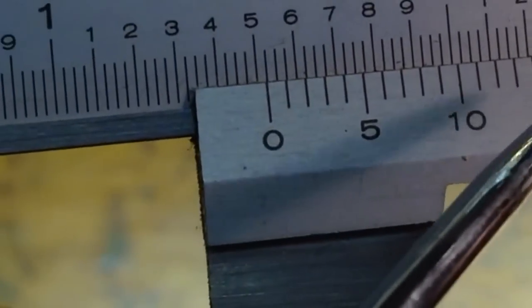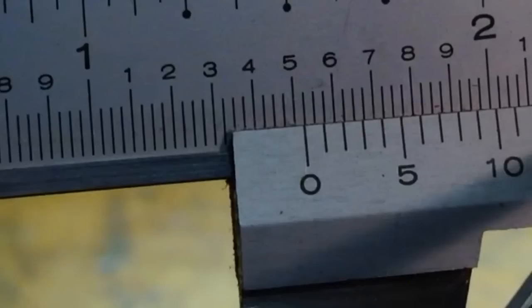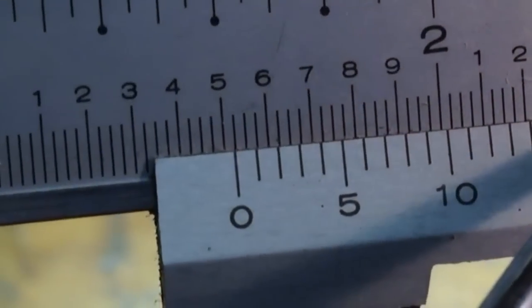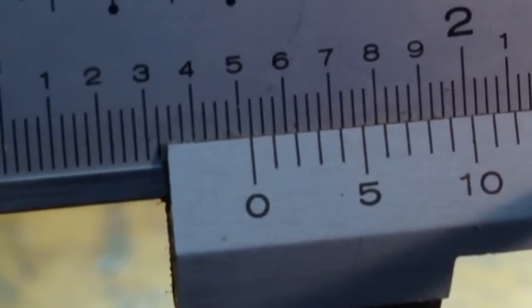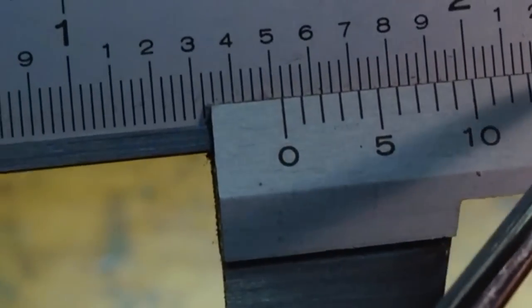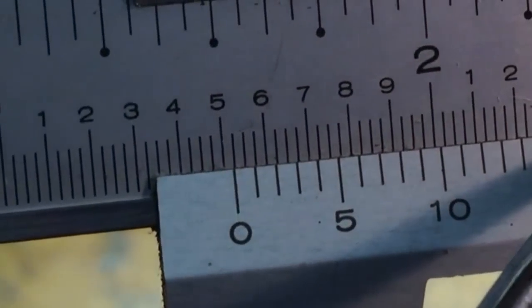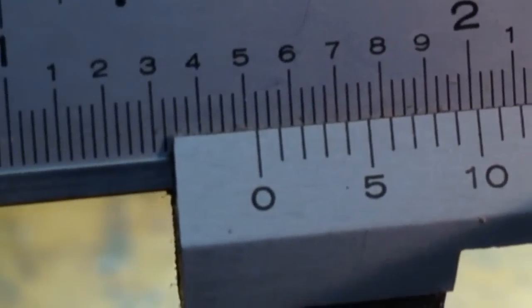Then all that's left to do is some simple math. You can see that the zero is to the left of the .025 mark, so we take the 1.5, and then we add the 22, so that's our measurement, 1.522.